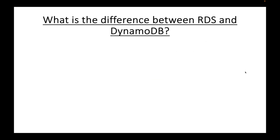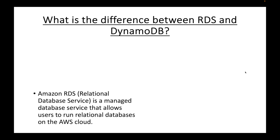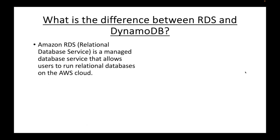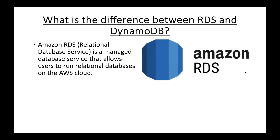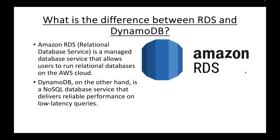The next common interview question is: what is the difference between RDS and DynamoDB? We have two categories of databases — SQL and NoSQL. RDS stands for Relational Database Service and is a managed database service that allows users to run relational (SQL) databases on the AWS cloud. DynamoDB, on the other hand, is a NoSQL database service that delivers reliable performance on low latency queries. So RDS is for SQL workloads and DynamoDB is for NoSQL workloads.